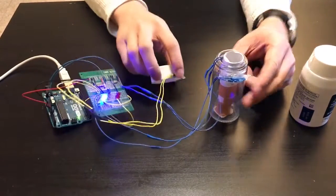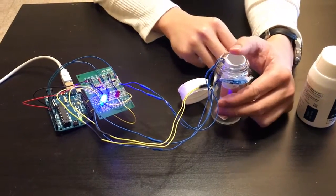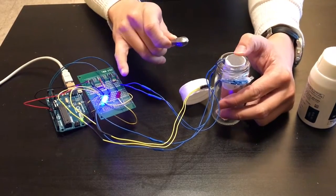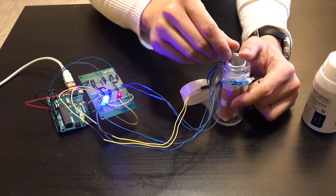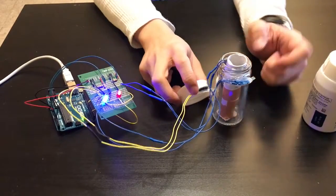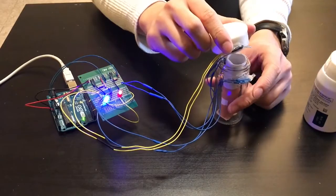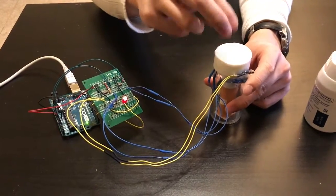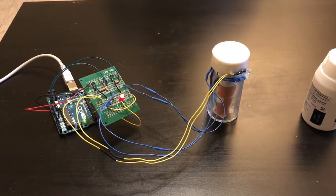We can also sense how many pills are in the pill bottle. This red LED here is connected to the pressure sensitive resistor and the brighter it is the more pills are in the pill bottle. This information is also sent via Arduino to our app that detects how many pills there are. So essentially we can detect if the patient has taken the pill and how many pills are left.